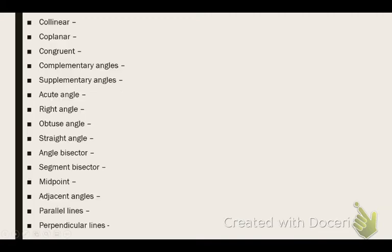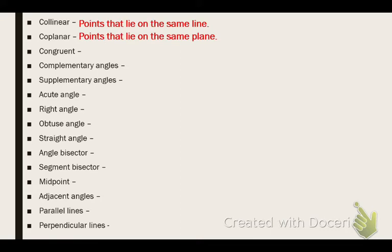Let's look at the terms. Just go ahead and make sure that they have the general gist. It doesn't have to be exactly word for word, but they couldn't just write down something random. Collinear — they're points that lie on the same line. Coplanar — points on the same plane. Congruent means same length or measure. They cannot just say the word 'same' — same length or measure.